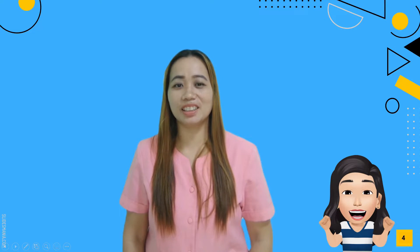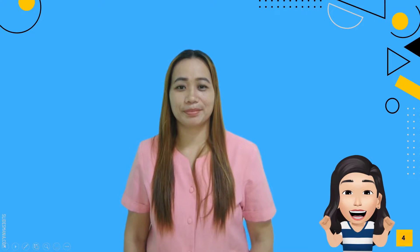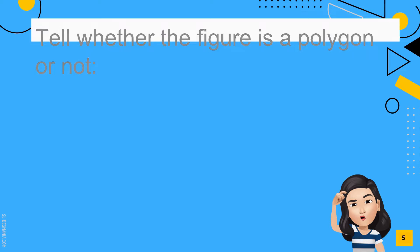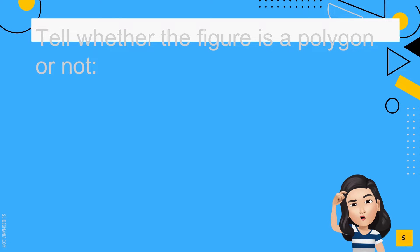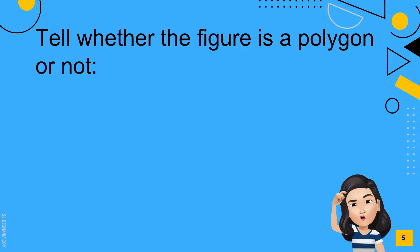Now that you have some ideas about the polygon, let's have a quick game. Tell whether the figure is a polygon or not. Number 1 — is this figure a polygon or not? Yes, it is a polygon.